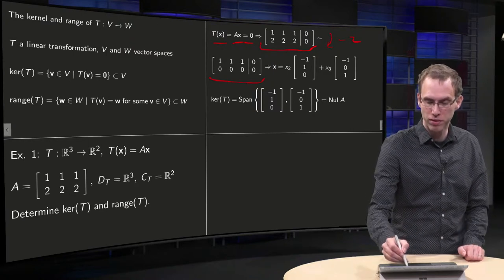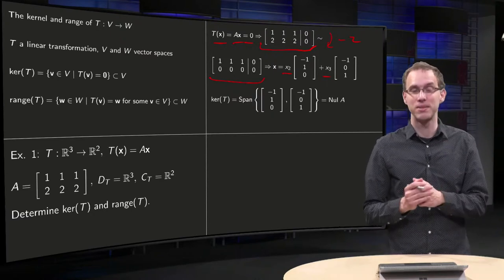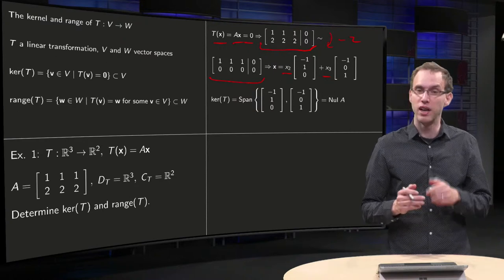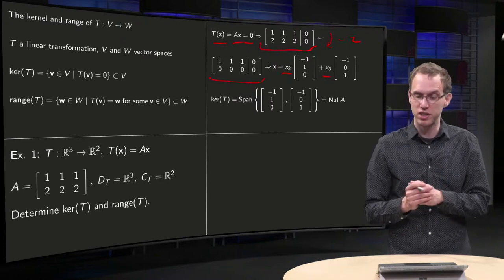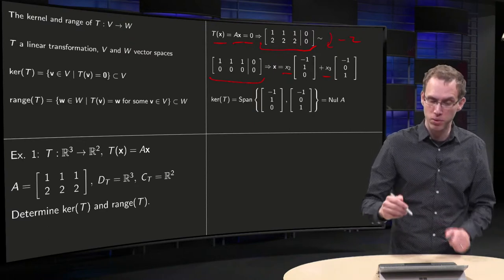You have two free variables, X₂ and X₃, and there we are. So you see that X is in the kernel of the transformation T if X is a linear combination of (-1, 1, 0) and (-1, 0, 1).